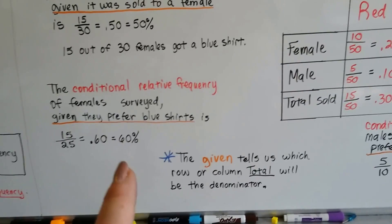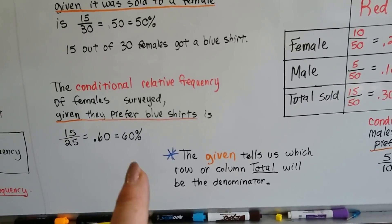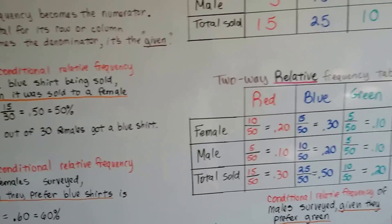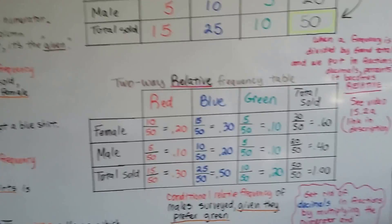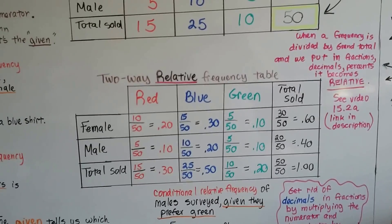And even if it's a two-way relative frequency table, we can still pull the information out of here.